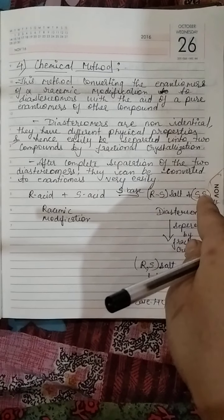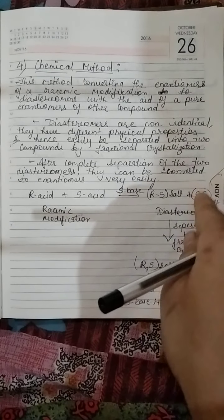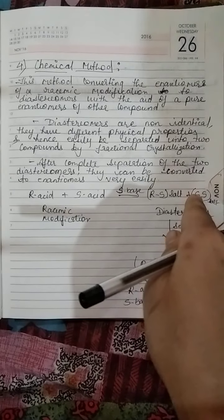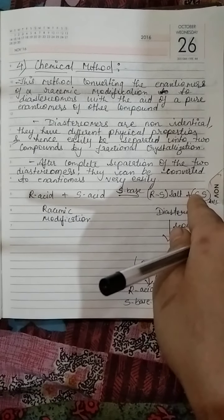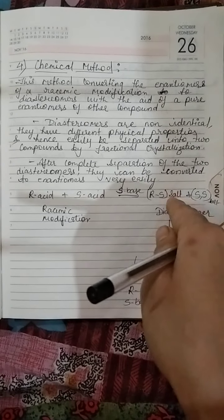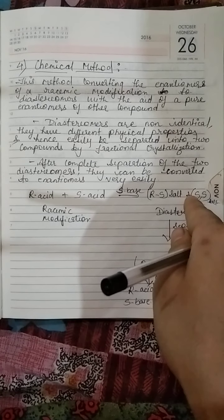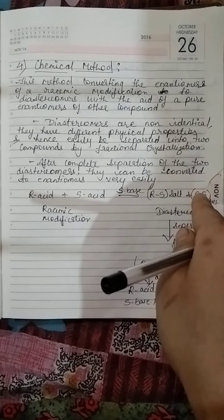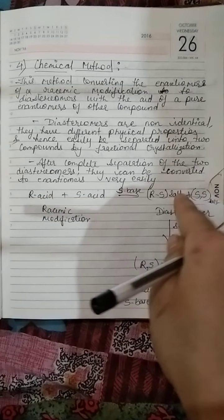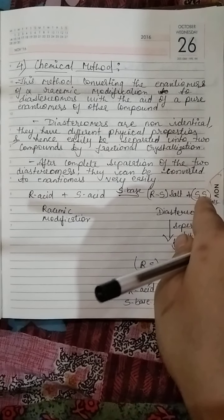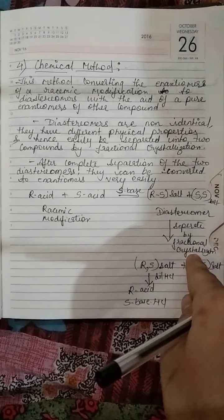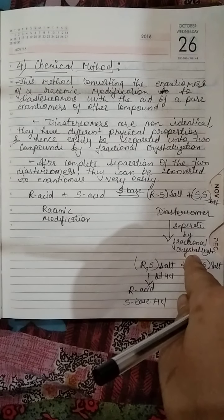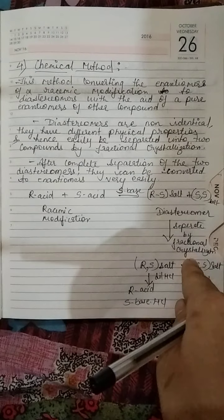Diastereomers means both compounds are totally different — they have different boiling points and every physical and chemical property is different for both diastereomers. So now it becomes very easy to separate these two diastereomers by fractional crystallization, or there are many other methods to separate them.